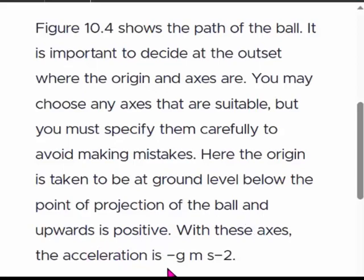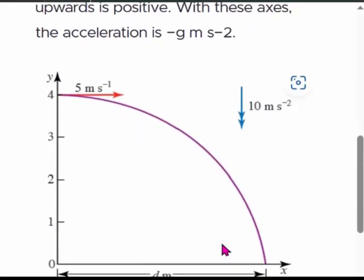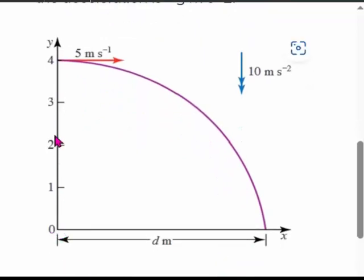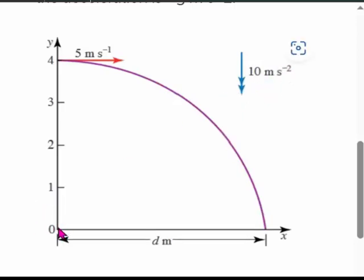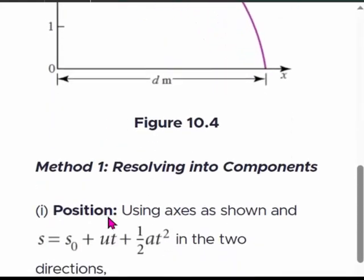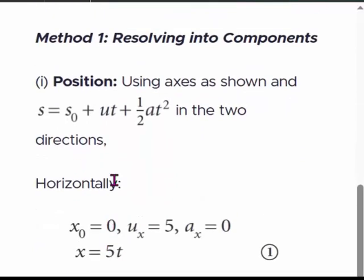Please note that we take the origin at this point and the positive direction is upward. Therefore, when the acceleration is downwards, it is negative g meters per second squared. The acceleration becomes negative because we are taking upward from the origin as the positive direction. Let's see the first method using components. We can use the famous equation s = ut + ½at², applying it in both directions. We have an initial displacement s₀ to account for.